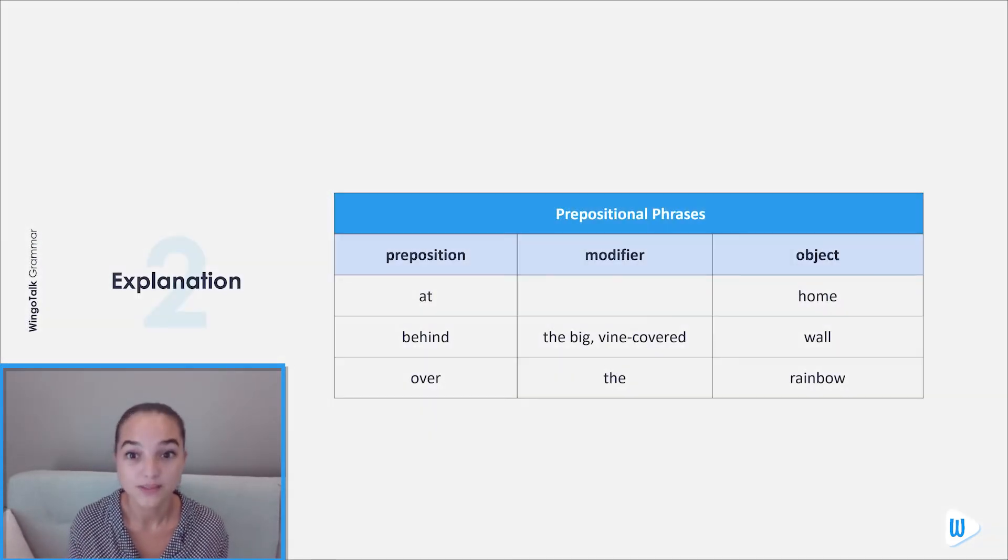For example, preposition plus object: at home. Preposition plus modifier plus object: behind the big vine-covered wall, over the rainbow.